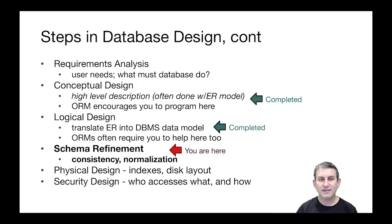To put us back into context, we talked about database design having a number of steps: requirements analysis, where you talk to your users and try to understand what they're trying to capture; conceptual design, which is done using the entity relationship model that we learned in the last lecture; and then logical design, where we translate that ER model into a database schema in the relational model. We're now at the phase where we can talk about schema refinement, where we try to get more correctness baked into our schema.